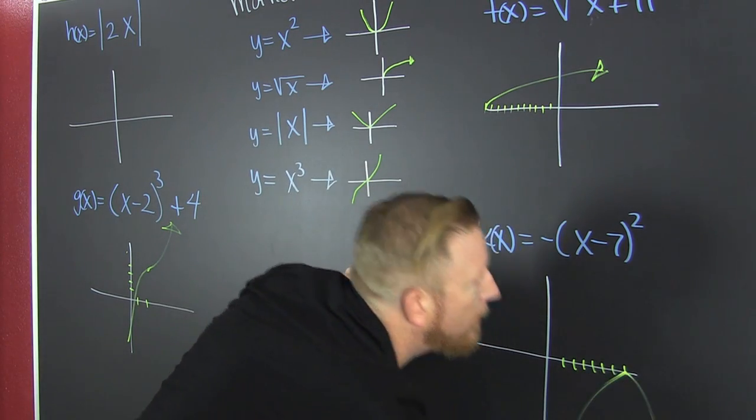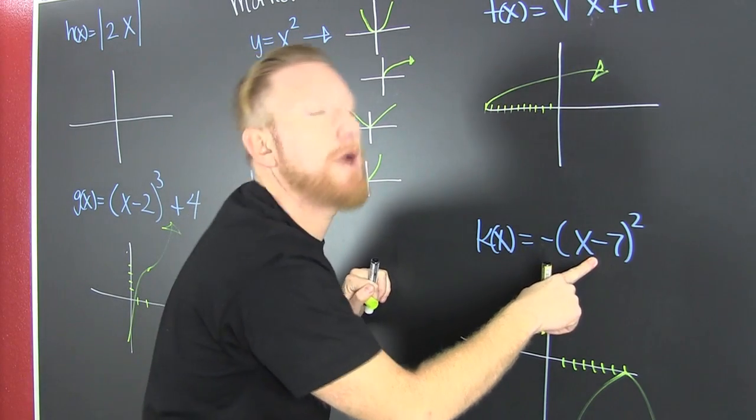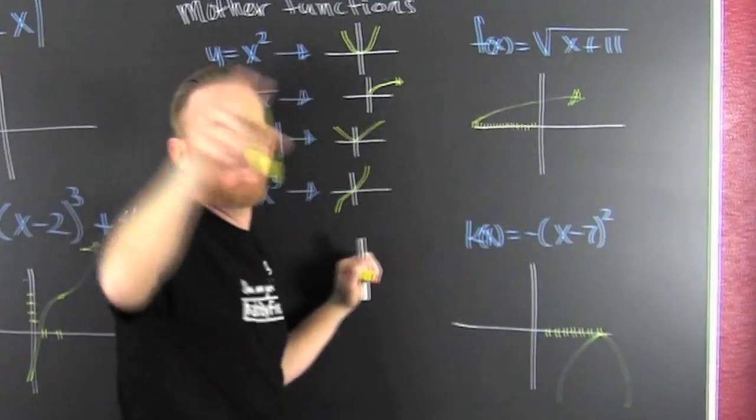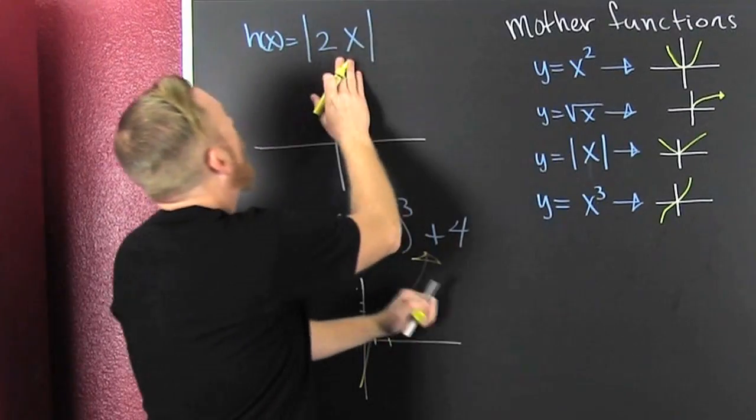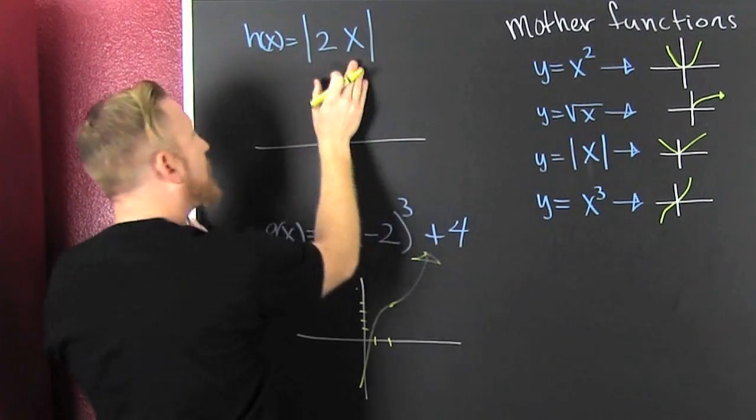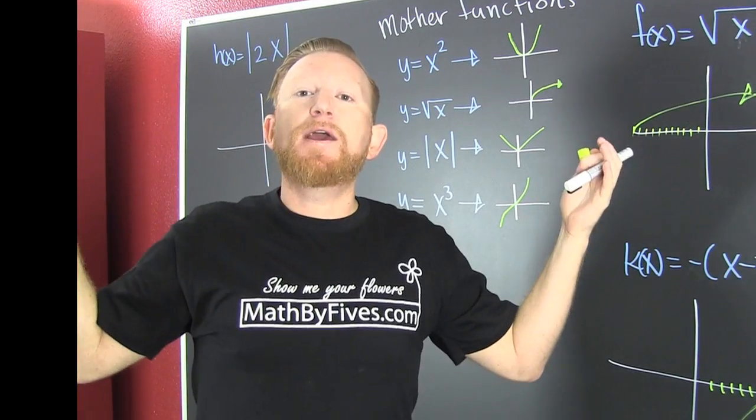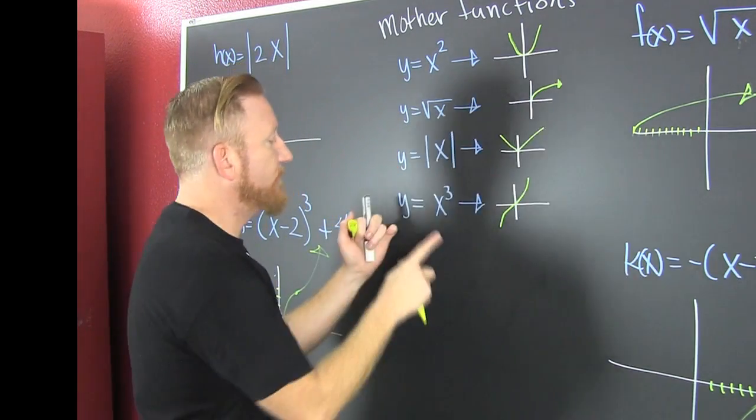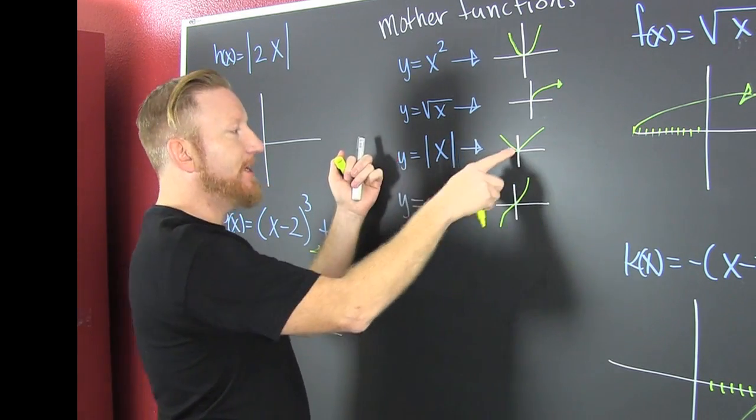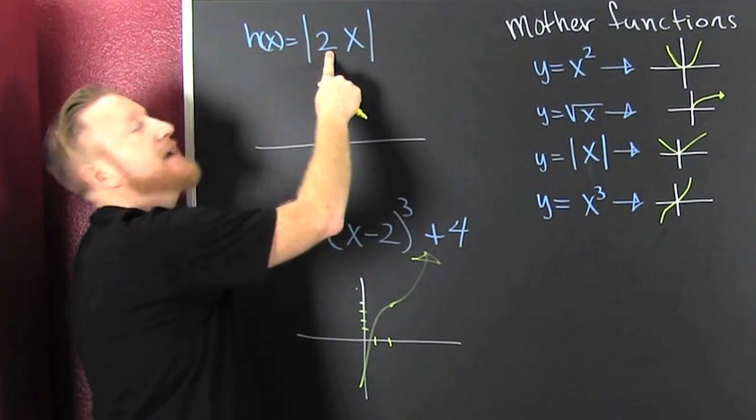That's a square opening down, shifted right 7 units. Now let's go up here - absolutely! It looks like I have the absolute value of 2x. I need to find its mother function. The mother function for absolute value is the V. This is 2 times x.